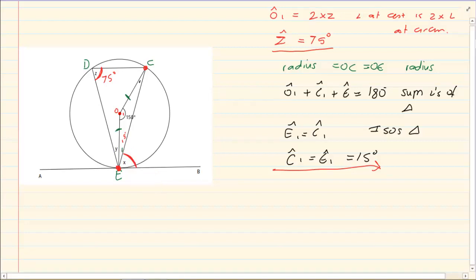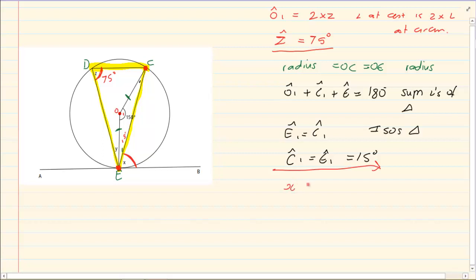Now look at X. If you are working with X, take point E and point C — because the chord is touching the tangent. Put your finger on E and on C and move together; they meet at Z. So X is equal to 75 degrees, and the reason is the tan-chord theorem.